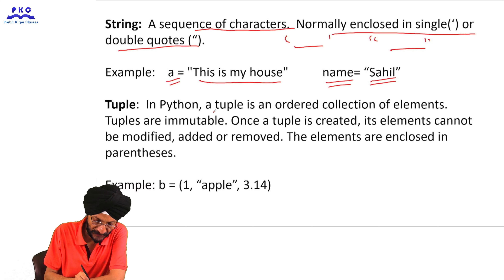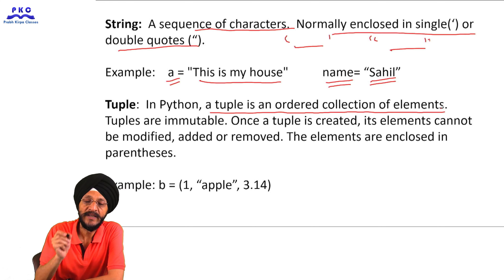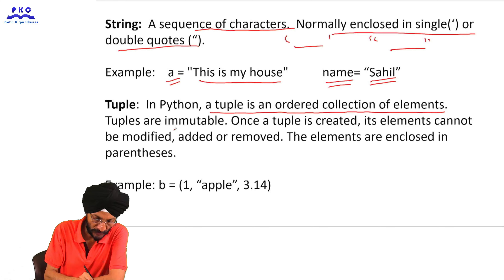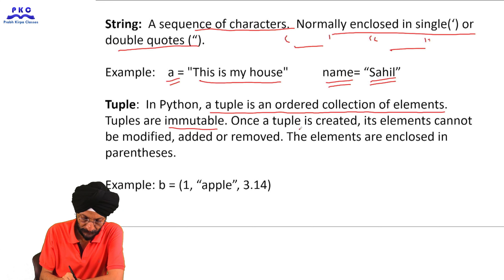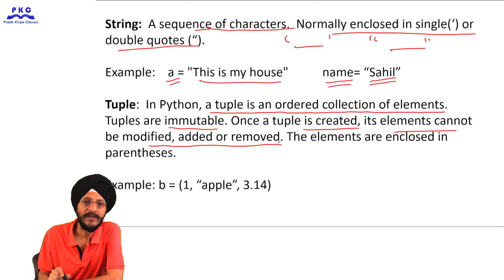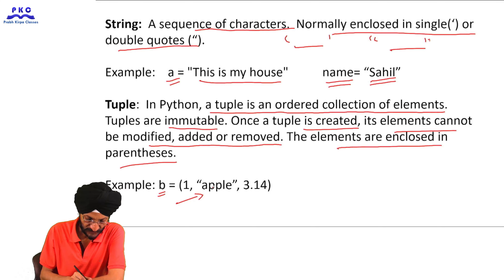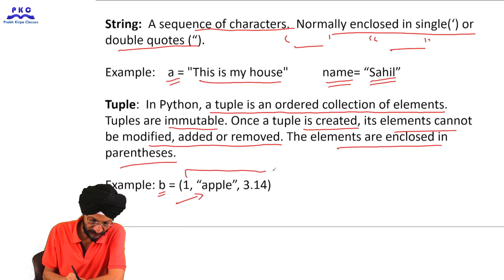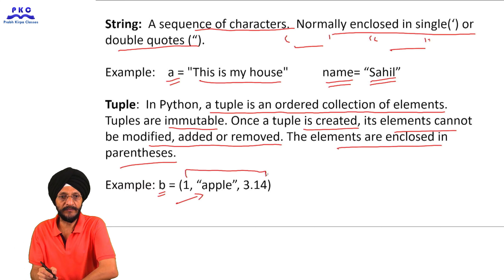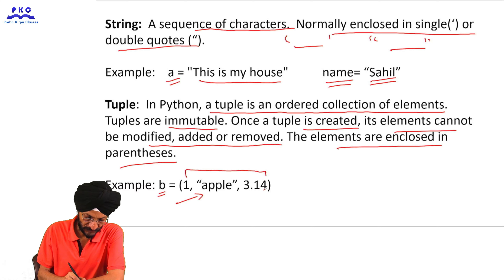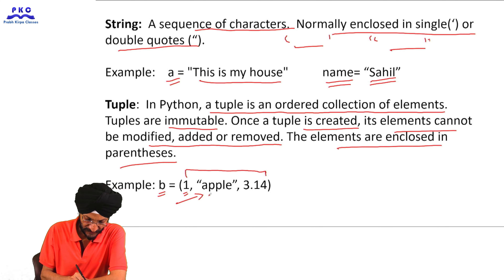A tuple in Python is an ordered collection of elements. Tuples are immutable — once a tuple is created, its elements cannot be modified, added, or removed. The elements are enclosed in parentheses. For example, variable 'b' is a tuple with elements 1, 'apple', 3.14 — where 1 is an integer, 'apple' is a string, and 3.14 is a floating value.